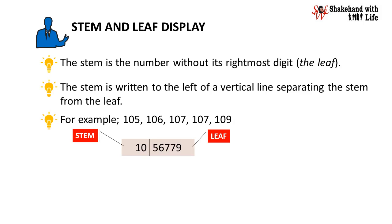For example, suppose we have the numbers 105, 106, 107, 107, and 109. We display them as 10 which is our stem, then a vertical line, and then the rightmost digits, the leaf: 56779.